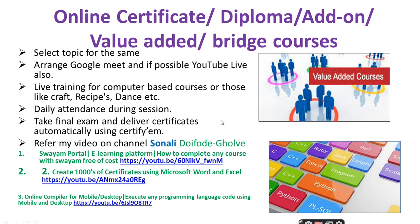Online certificate, diploma, add-on, value-added, and bridge courses. You can arrange all of these as they are very important. Certificate courses, add-on courses, and value-added courses come under criteria 1. Select a topic for the course, arrange Google Meet and if possible YouTube Live. Live training is available for computer-based courses or activities like craft, recipes, or tasks. You can use an online compiler for different programming languages — for example, if conducting a value-added course in Python. Students can do this on mobile as well and acquire more knowledge.